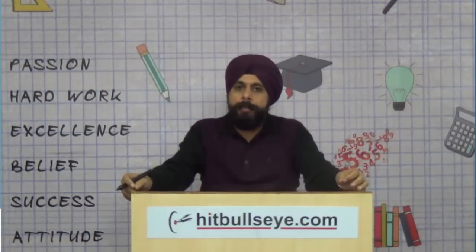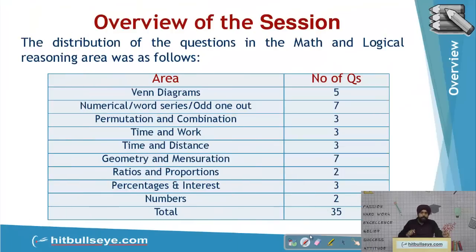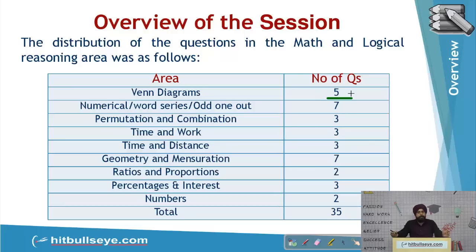Before we proceed with questions from previous years, let's discuss an overview and pattern for the DISNET exam. Last year there were 35 questions from quant and reasoning: 5 from Venn diagrams, numerical word series, odd man out, 7 from permutation-combination, time and work, time and distance at 3 questions each, 7 from mensuration and geometry, 2 on ratios, and 3 on percentage and interest.